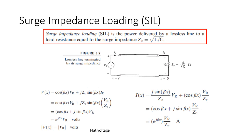This is surge impedance loading. We have surge impedance Z, and what's called surge impedance loading. Surge impedance loading is the power delivered by a lossless line to a load resistance equal to the surge impedance. So we call it surge impedance loading — the power delivered to a load resistance that equals the surge impedance, meaning the load impedance equals the line's characteristic impedance.